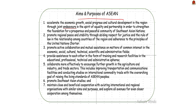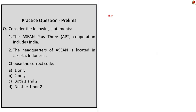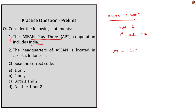The ASEAN Summit is the highest policymaking body in ASEAN, comprising heads of state or government of ASEAN member states. Summits are held twice annually. The first ASEAN Summit was held in Bali, Indonesia on 23rd-24th February 1976. Statement 1 says ASEAN Plus Three (APT) cooperation includes India — this is incorrect. APT includes ASEAN plus China, Japan and the Republic of Korea (South Korea). This cooperation began in December 1997.